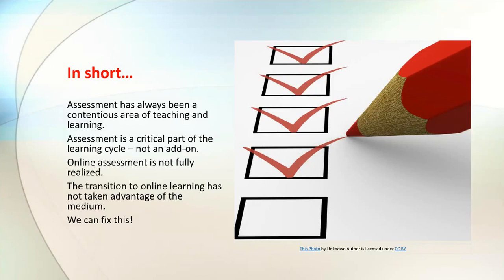Assessment must be a critical part of the learning cycle and not an add-on. Unfortunately, in many occasions it's treated as an add-on for the purpose of measurement. It should be part of the initial planning stages so that assessment can be congruent with everything else you're doing in the course — your course outcomes, your course activities, and your content. Our supposition is that online assessment is not fully realized — that in the transition, we haven't taken advantage of the online medium and all its affordances.